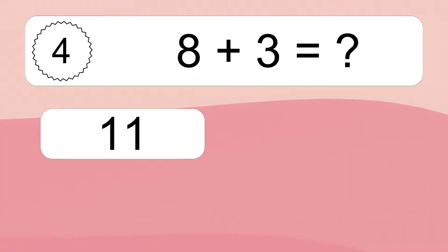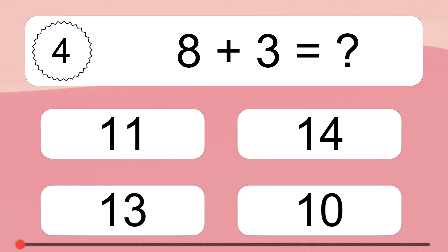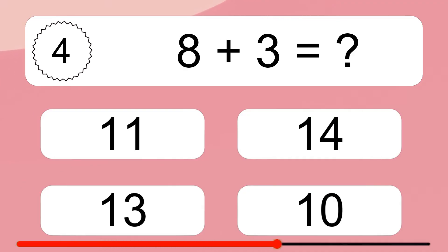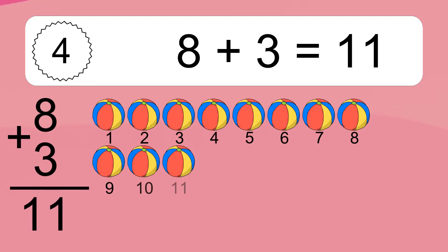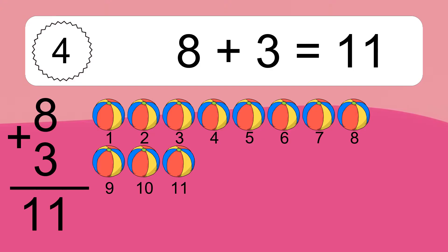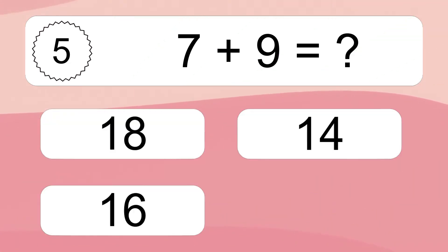8 plus 3 equals what? 8 plus 3 equals 11. Let's count it. 1, 2, 3, 4, 5, 6, 7, 8, 9, 10, 11.